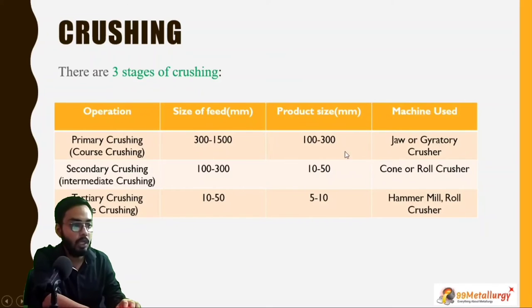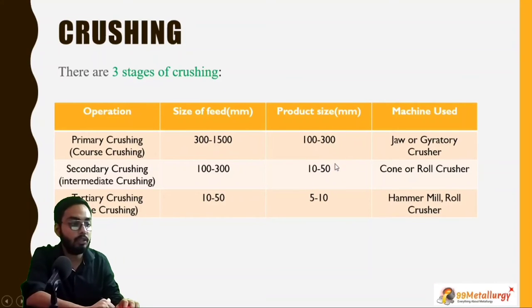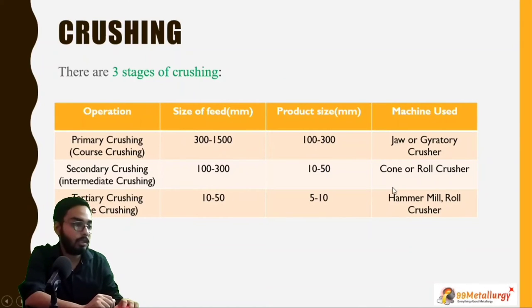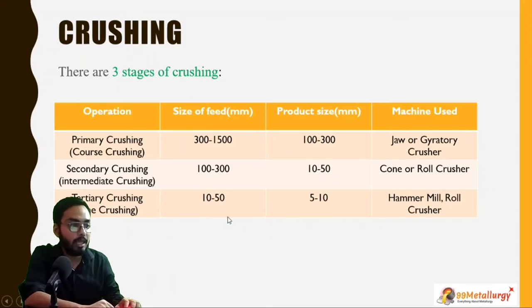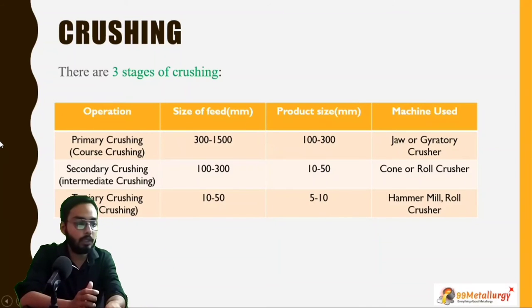In secondary crushing, also called intermediate crushing, the feed is the product of primary crushing at 100 to 300 mm, and the resulting product size is 10 to 50 mm. The machines used are roll crusher, cone crusher, and jaw crusher. In tertiary crushing, also called fine crushing, the feed of 10 to 15 mm is reduced to 5 to 10 mm, and the machines used are hammer mill and roll crusher.